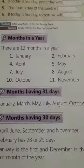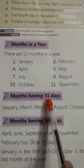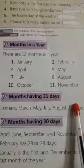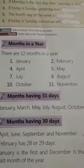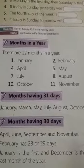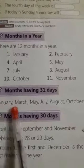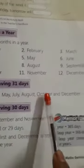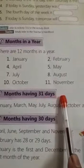Now look here — months having 31 days. There are some months which have 31 days: January, March, May, July, August, October and December have 31 days.